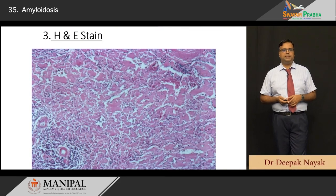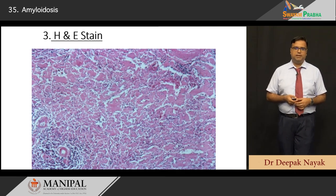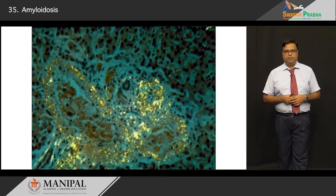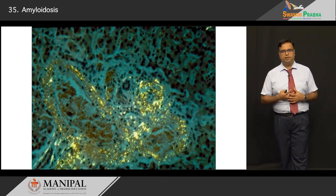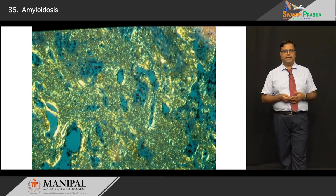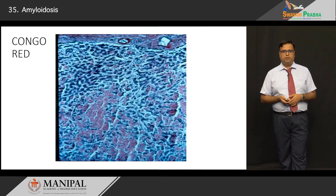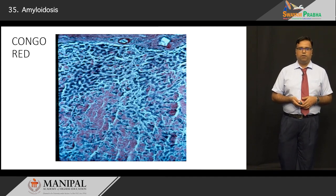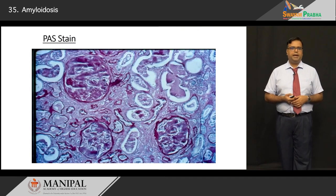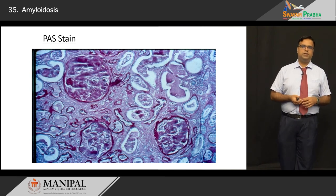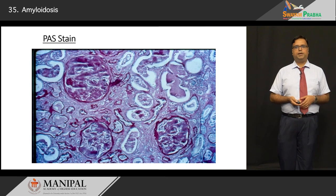Looking at the images: the H&E stain from the spleen shows large lakes of pink, extracellular, amorphous material in the stroma — that is amyloid. The apple-green birefringence under polarizer is unmistakable — that color staring at you is amyloid. More map-like areas of amyloid are also visible under polarizer. The Congo red stain shows red/pink areas brought about by the stain. The PAS stain gives a magenta color, with outlines stained pink; within the glomeruli, small structures take on the typical pink color of amyloid.